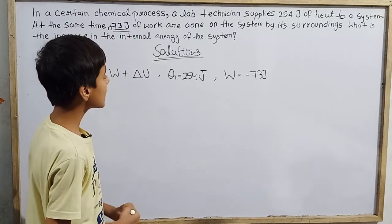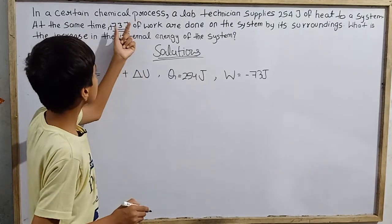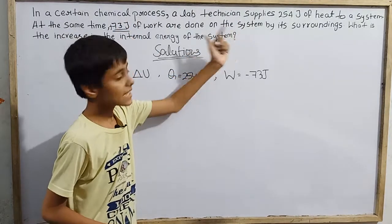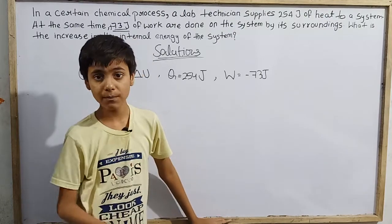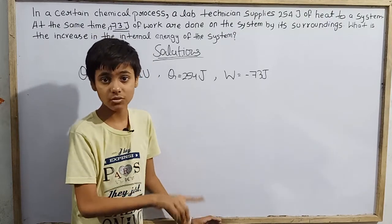So let's reverse this. We just have to reverse this because of the negative. The system receives work from surroundings, so it's negative 73 joules. That's the main thing in this question.